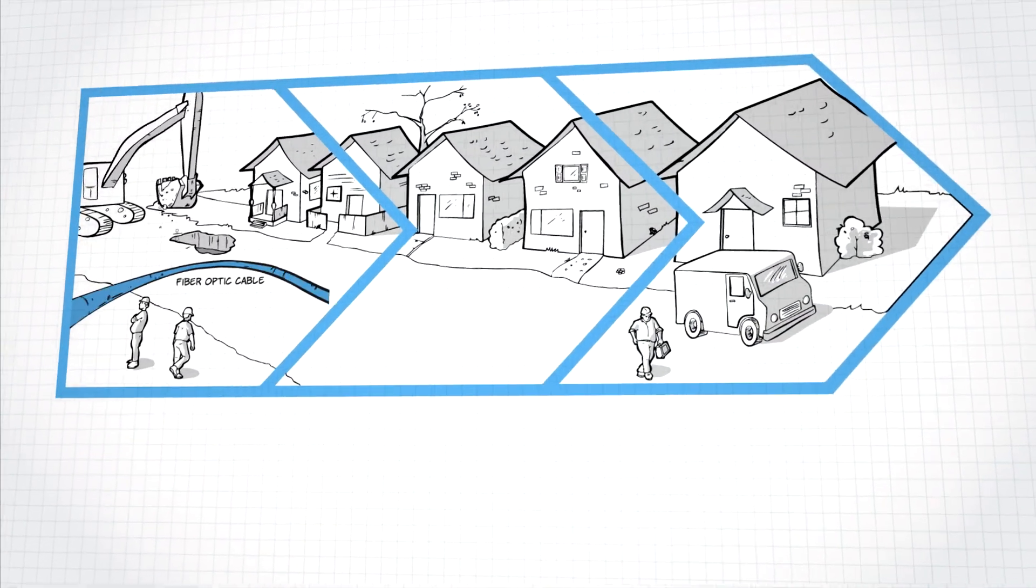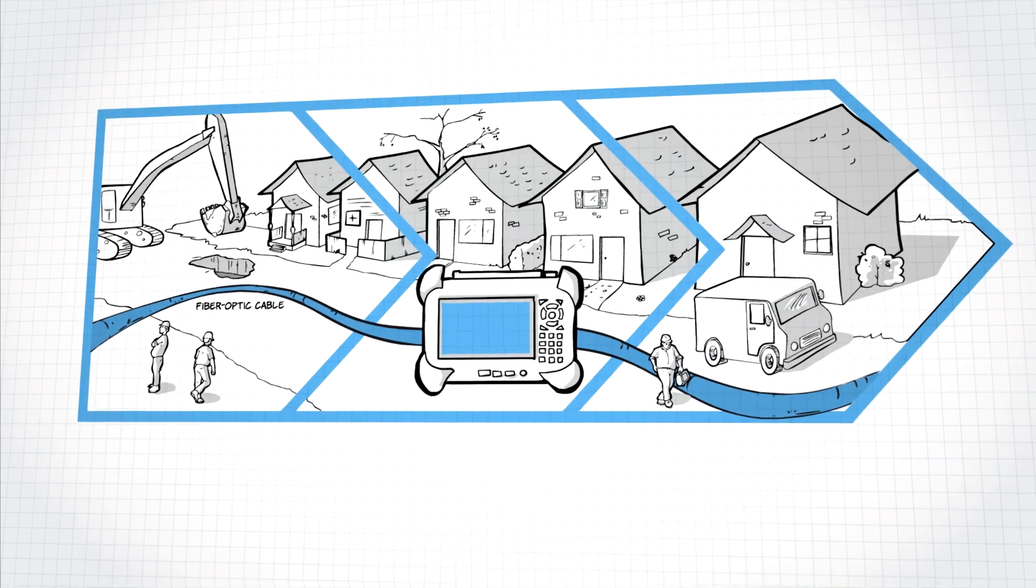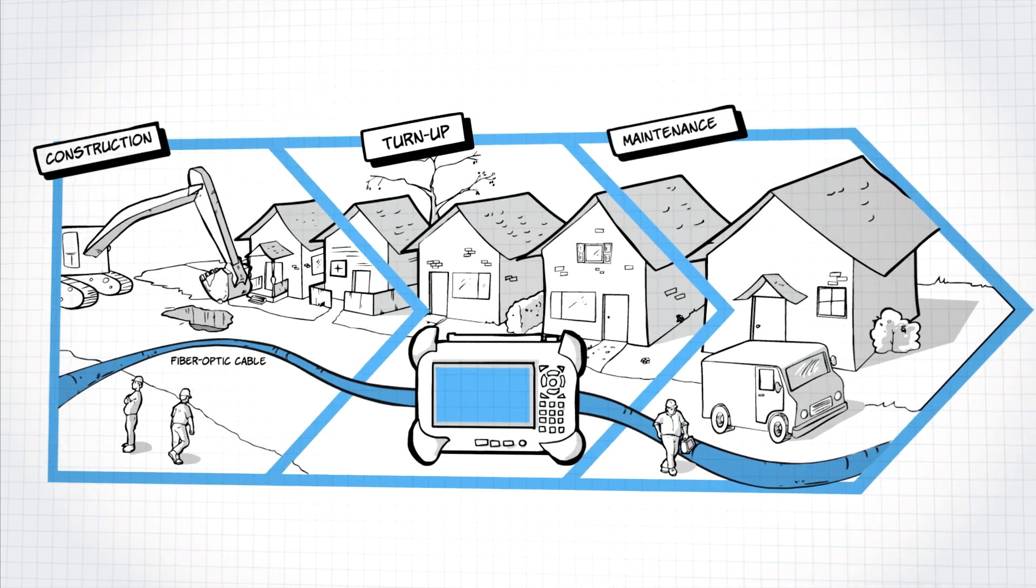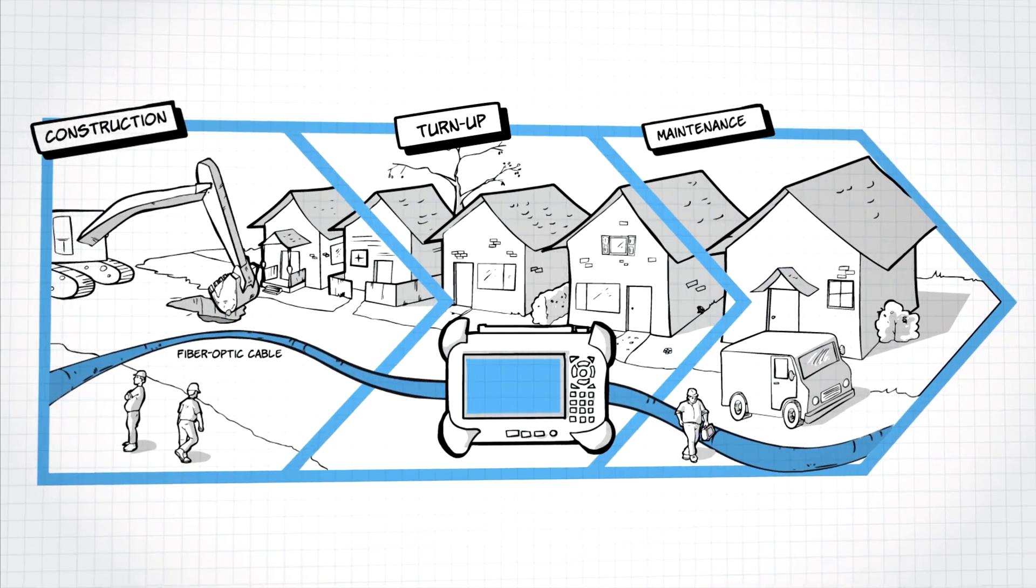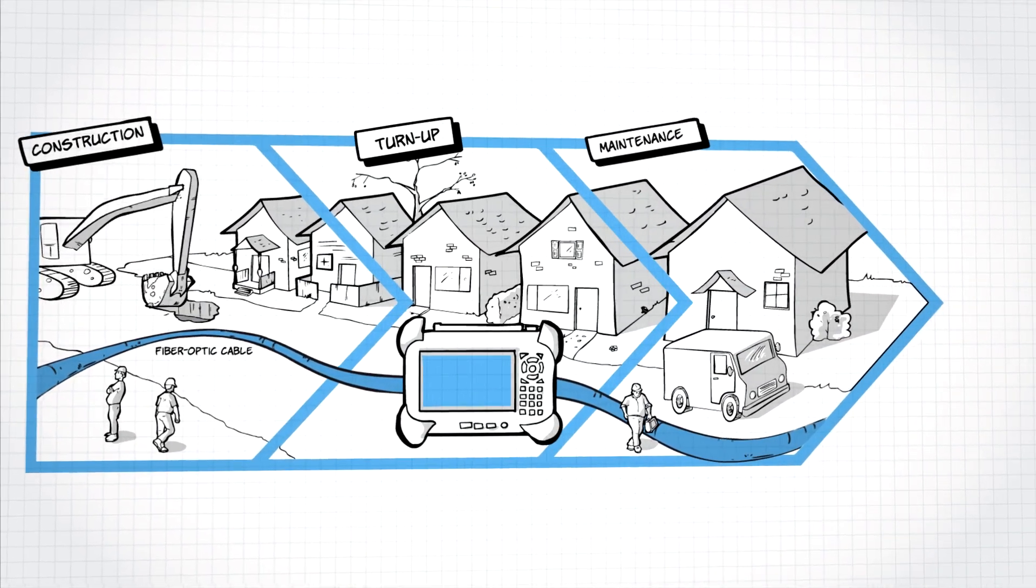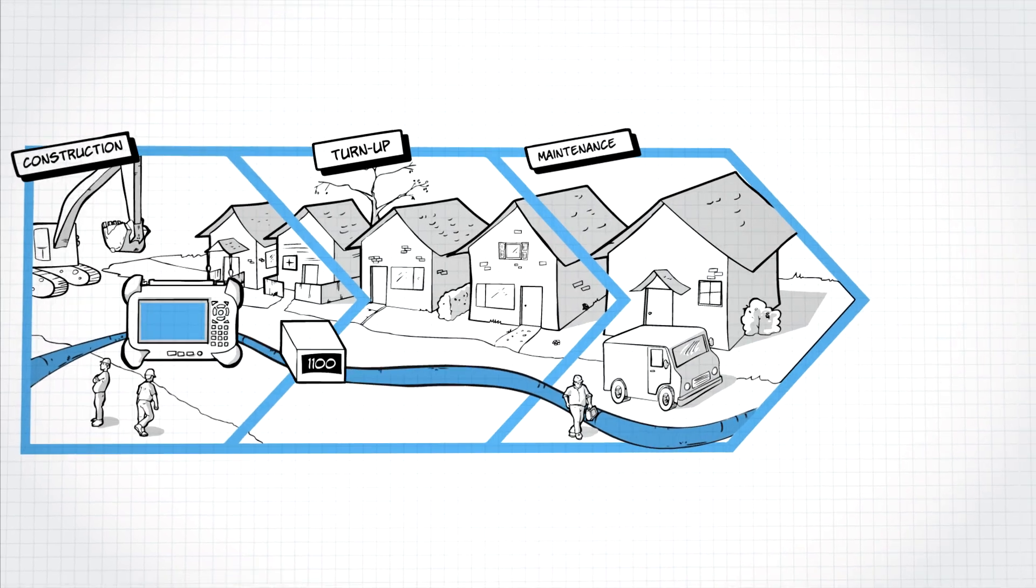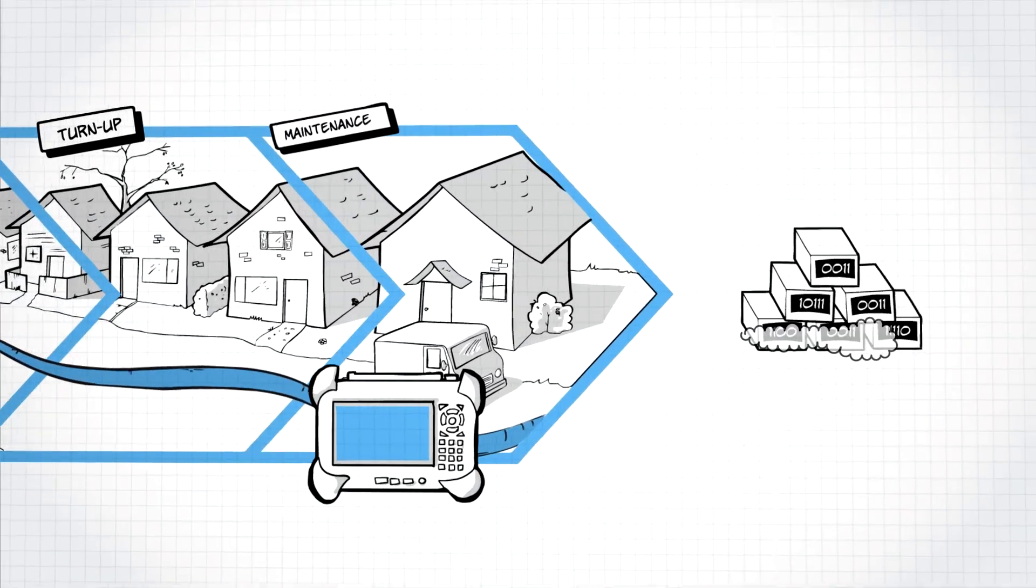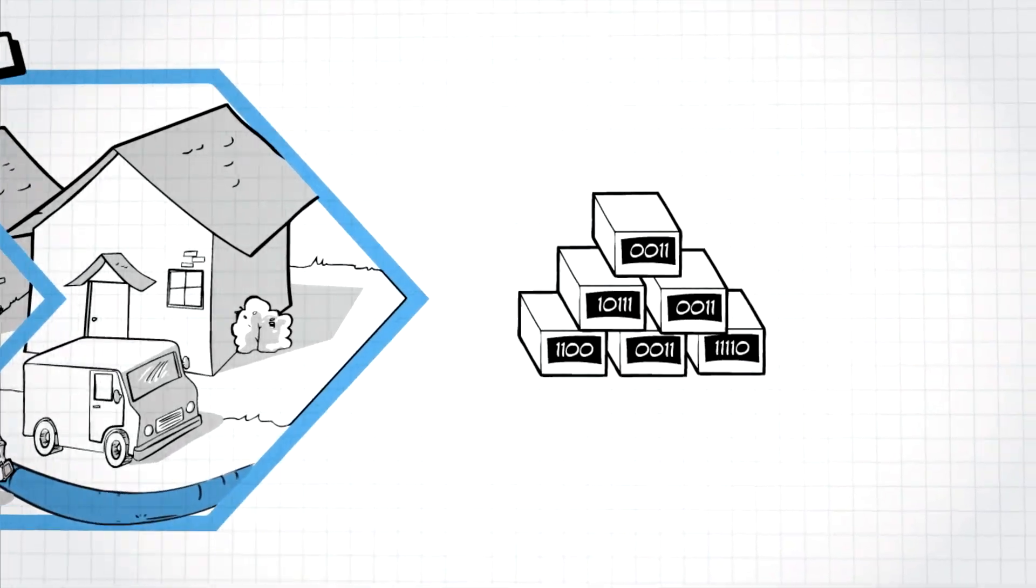When using an FTB platform in the field, whether for network construction, turn-up or maintenance, EXFO Connect can be enabled in real-time at any point of the job cycle. And because it correlates the information right from the moment you start building the network to when you need to send maintenance teams, the test data are turned into true business intelligence.